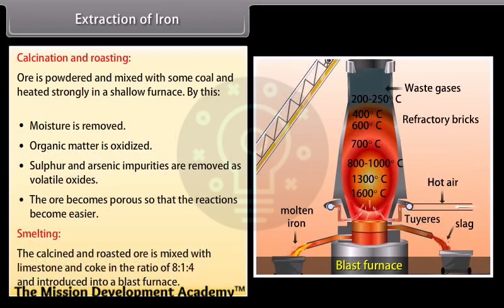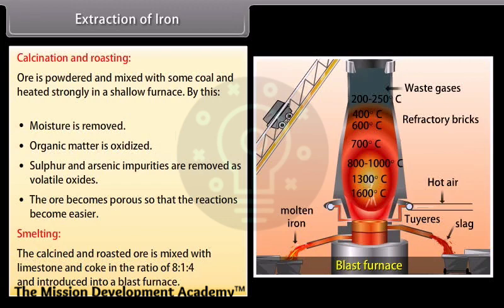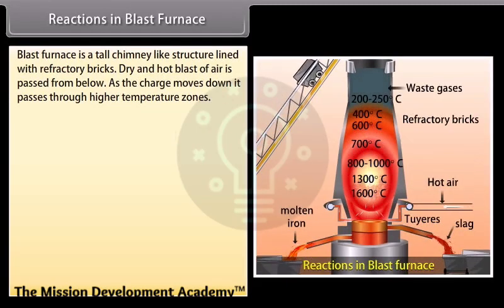Smelting. The calcined and roasted ore is mixed with limestone and coke in the ratio of 8 ratio 1 ratio 4 and introduced into a blast furnace. Reactions in blast furnace: Blast furnace is a tall chimney-like structure lined with refractory bricks. Dry and hot blast of air is passed from below. As the charge moves down, it passes through higher temperature zones. On the basis of variations in temperature in the different parts of the blast furnace, there are various zones where different chemical changes take place.